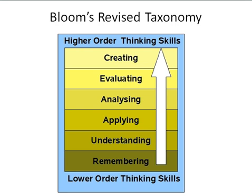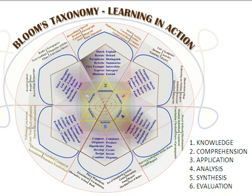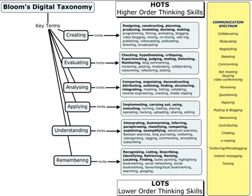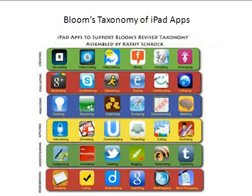Bloom's Taxonomy talks about the higher order of thinking required and correlates that to deeper understanding. Diagrams such as this one show action words associated with each level of understanding in the taxonomy of thinking skills. We can see here that Bloom's has even been adapted to the digital world and even to iPad apps.